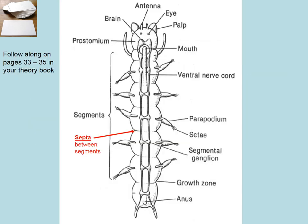So pages 33 to 35 in your textbook — you can label along or just follow and make notes. Let's start with a single segment, because these things repeat throughout the length of the body. The only things that are different are the head region and the last segment. Everything else will be a carbon copy of itself; these segments will look just the same.